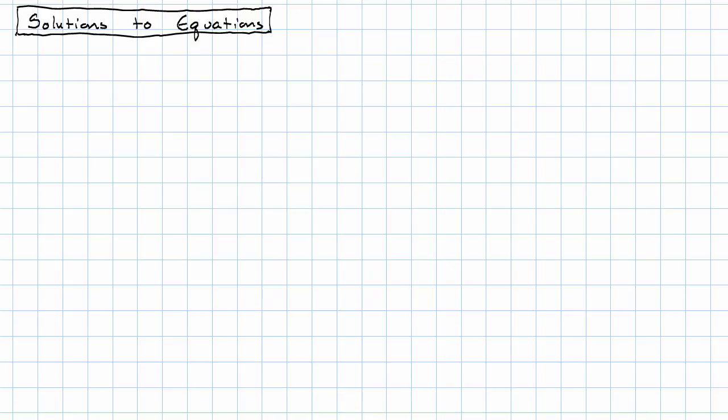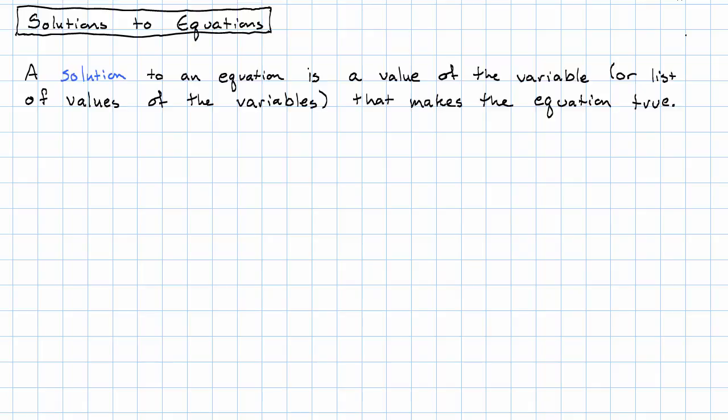In the last video, we talked about equations as restricting the possible values of the variable. We have a word to refer to those possible values. A solution to an equation is a value of the variable, or if there are several variables, a list of values of the variables that makes the equation true.